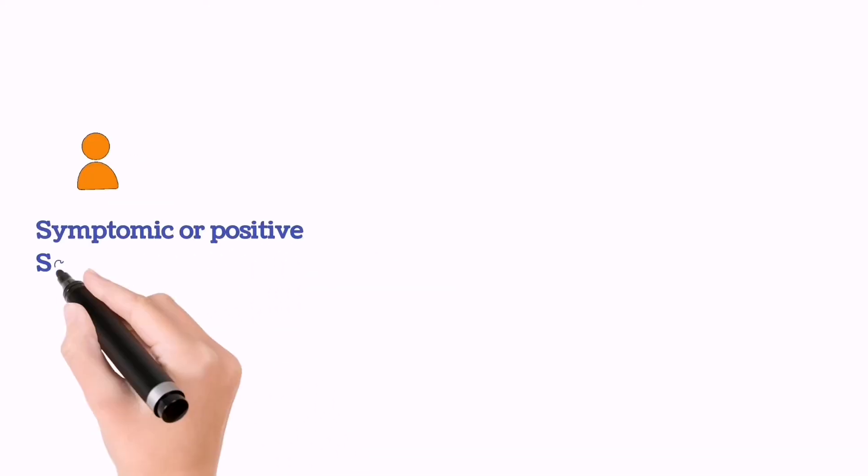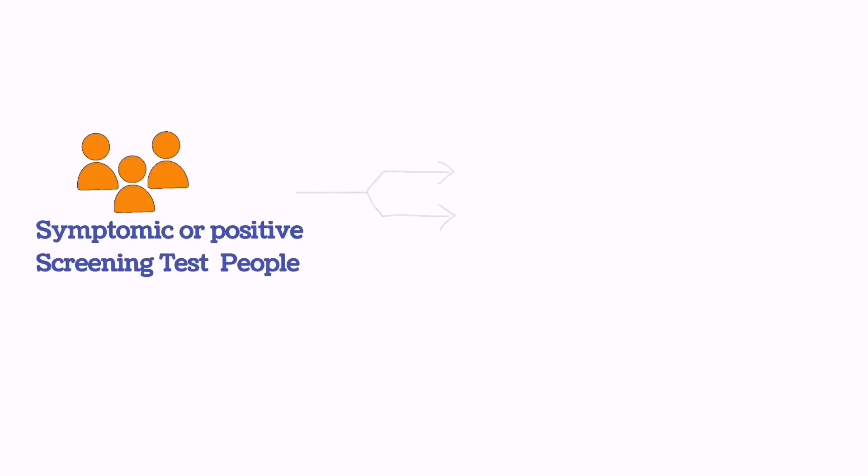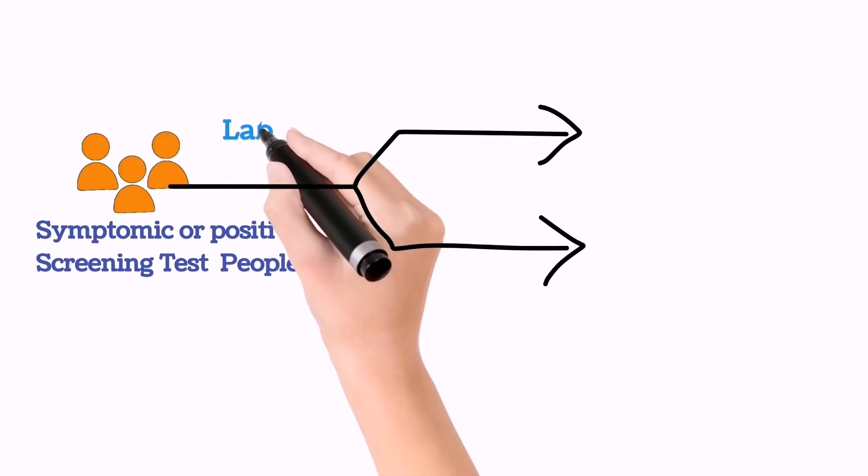Now let's explain with an example. So on the left side, it is the symptomatic or positive screening test population. To confirm whether the positive screening test people are true positive or false positive.